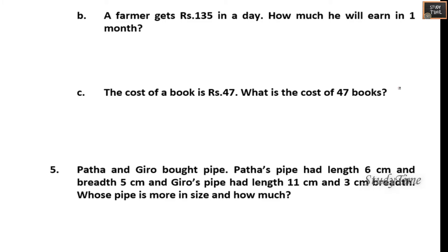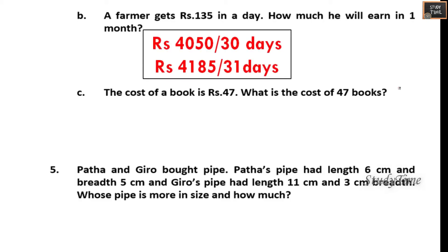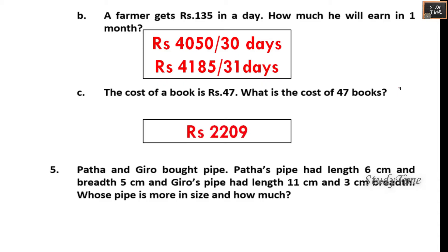How much will the farmer earn in one month? If it is 30 days he will earn rupees 4050; if it is 31 days, rupees 4185. The cost of a book is 47 rupees — what is the cost of 47 books? You have to multiply 47 into 47.